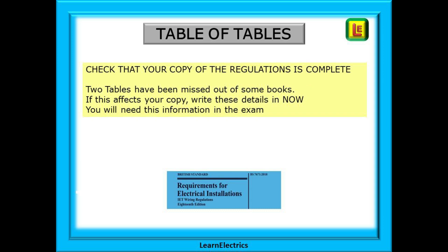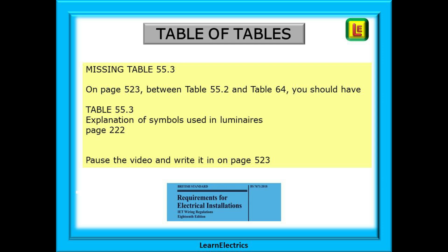The first thing that we must do is to check that your copy of the Regulations is complete. Two tables have been missed out from some books. If this affects your copy, write these details in now — you will need this information in the exam. Look on page 523. Table 55.3 may be missing. Between table 55.2 and table 64 you should have table 55.3. It is called Explanation of Symbols Used in Luminaires, and the page number is 222.